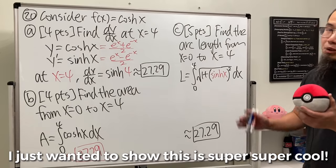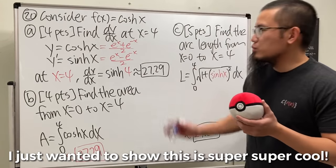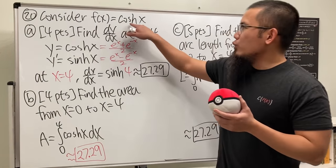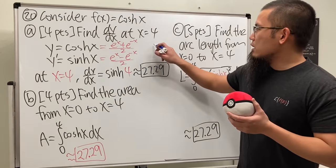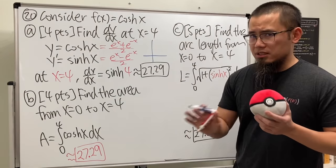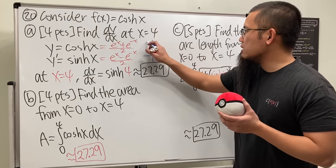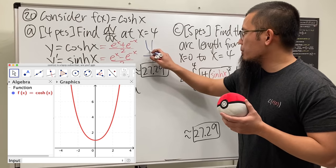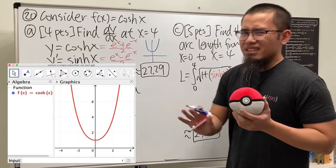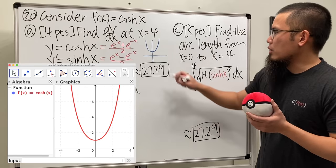I just really want to show this is super, super cool. When you have cosh(x), the cosh function looks like this. It's almost like a parabola but it's not—it's like an upward opening U, but it's not a parabola.